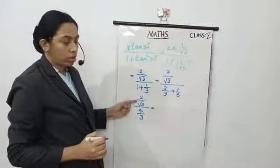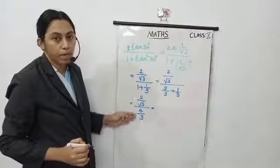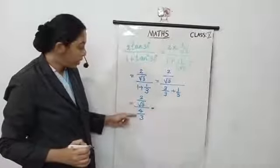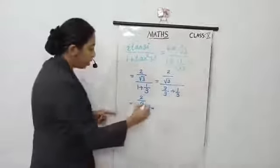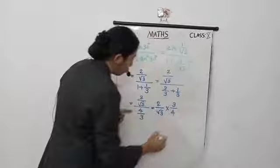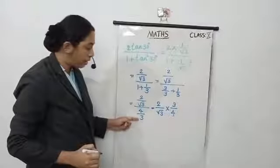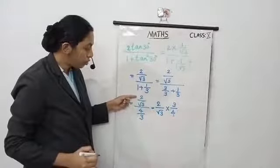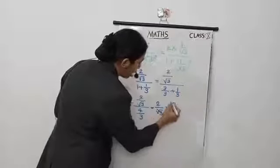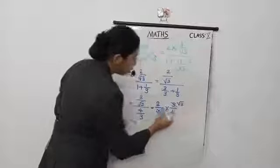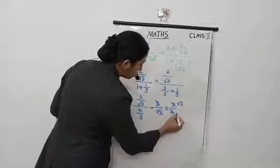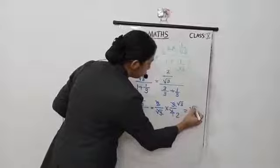Division of a fraction by another fraction is multiplication of this fraction with the reciprocal of the other fraction. So write 2 by root 3 multiplied by the reciprocal 3 by 4. Here we can cancel root 3 and 3 — we get root 3. That is root 3 into root 3 is 3. So we can cancel here; 2 and 2 cancel since 2 twos are 4. So the final answer is root 3 by 2.